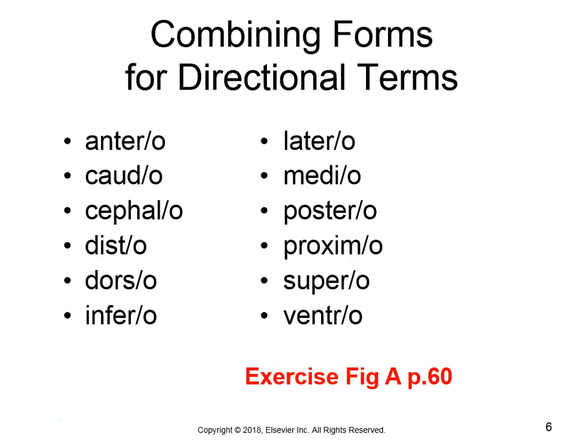Disto, like distance, means away — specifically away from where something is attached to the body. Most of the time you'll use it with arms and legs; for example, your hand is distal to your elbow because it's farther from where your arm attaches to your body. Dorsal, like the dorsal fin on a shark, means back — it's the opposite of ventral, which means belly. Postero also means back. Usually dorsal and ventral are paired together, and anterior and posterior are paired together to mean front and back.